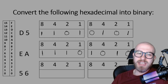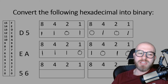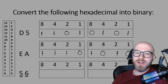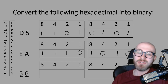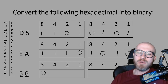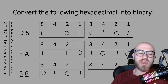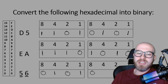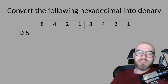A common mistake people make: you've got to read the question properly. This one says convert the following hexadecimal into binary. It obviously looks like 56, but it's not — you've got to look at it as two separate hexadecimal values: 5 and 6, not 56. So for 5: we don't need the 8, we do need the 4, we don't need the 2, and we do need the 1. For 6: we don't need the 8, we do need the 4, we do need the 2, and we don't need the 1.